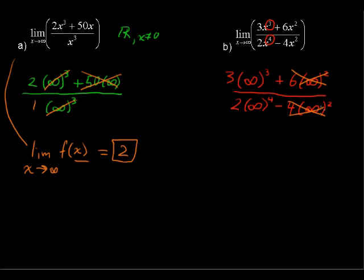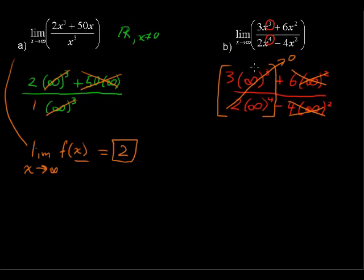Likewise, 4 times infinity squared is nothing compared to infinity to the fourth. Now what we have is a large number — 3 times infinity to the third — divided by an even bigger number. It's an infinitely larger number, because the denominator is infinity times more. So this entire thing goes to zero. Something small divided by something infinitely large goes to zero. So the limit of g of x as x approaches infinity equals zero.